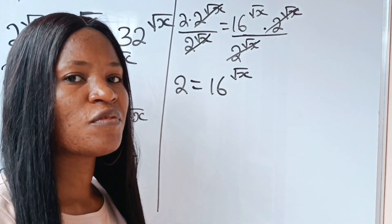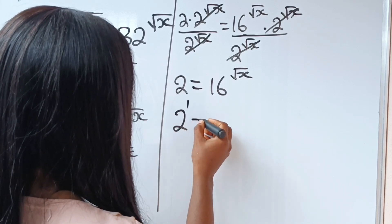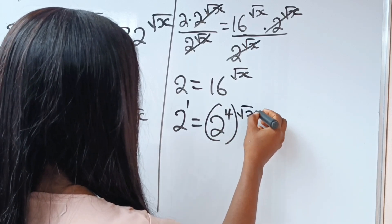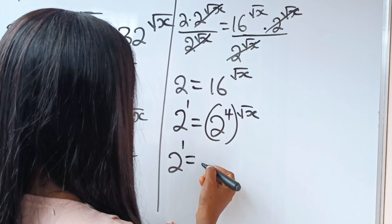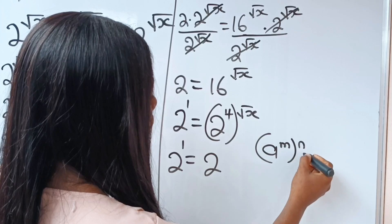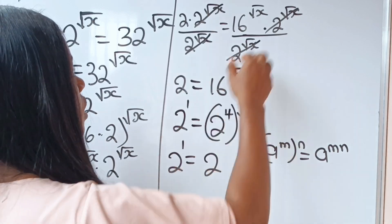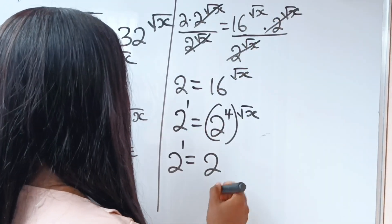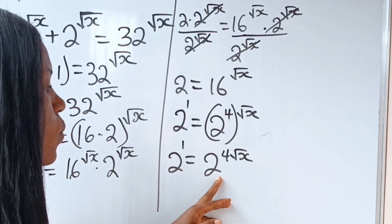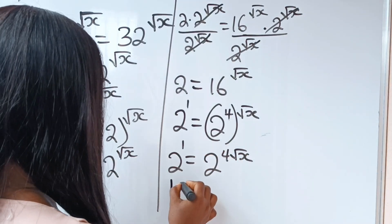We write 2 as 2 to the power of 1, and 16 can be written as 2 to the power of 4. Using the rule that a to the power of m raised to the power of n equals a to the power of m times n, we multiply the exponents to get 2 to the power of 1 equals 2 to the power of 4 root x. Since the bases are the same, we can equate the powers.